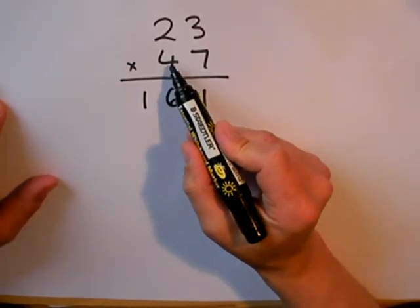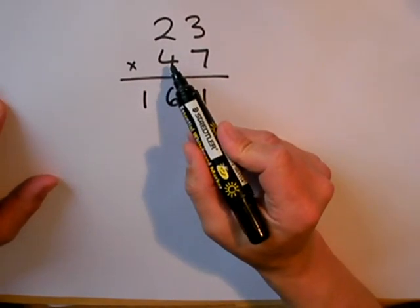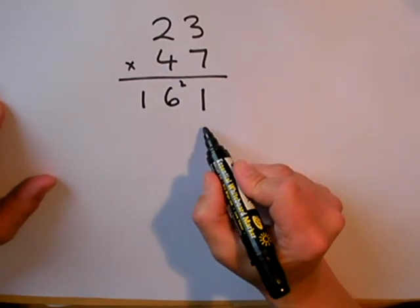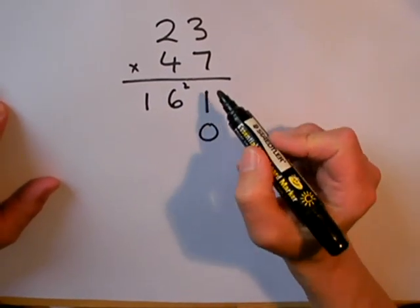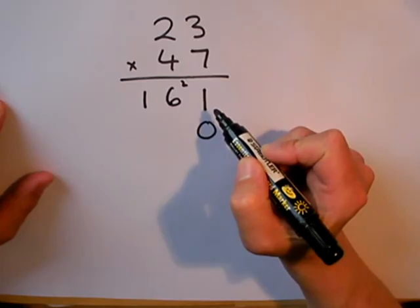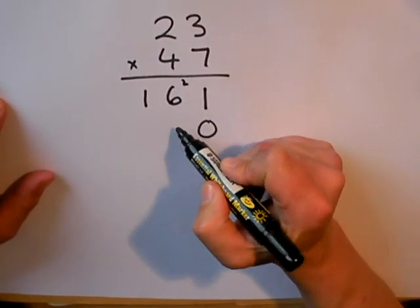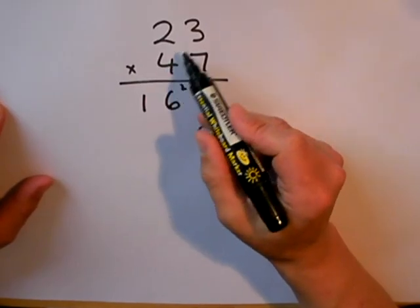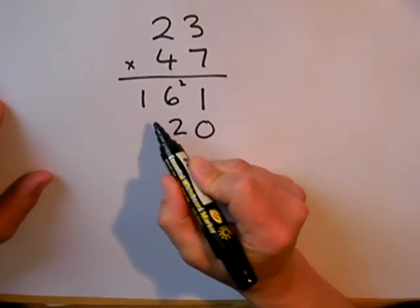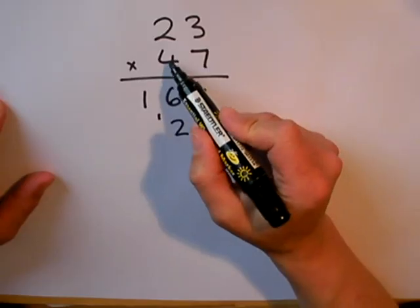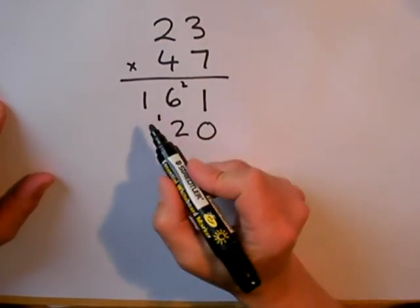Now, because I'm multiplying by 40 next, then what I'm going to do is multiply by 4, but put a note down so that I remember I'm multiplying by 40. I'm going to start by putting my answer to 4 threes underneath the 6. 4 threes are 12. 2 down, 1 to carry. 4 twos are 8, plus the 1 to carry is 9.